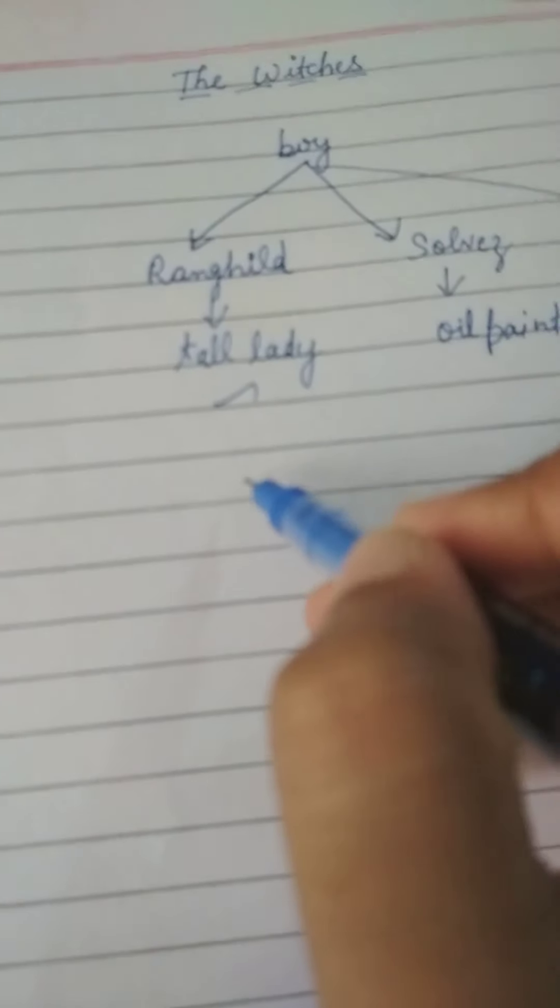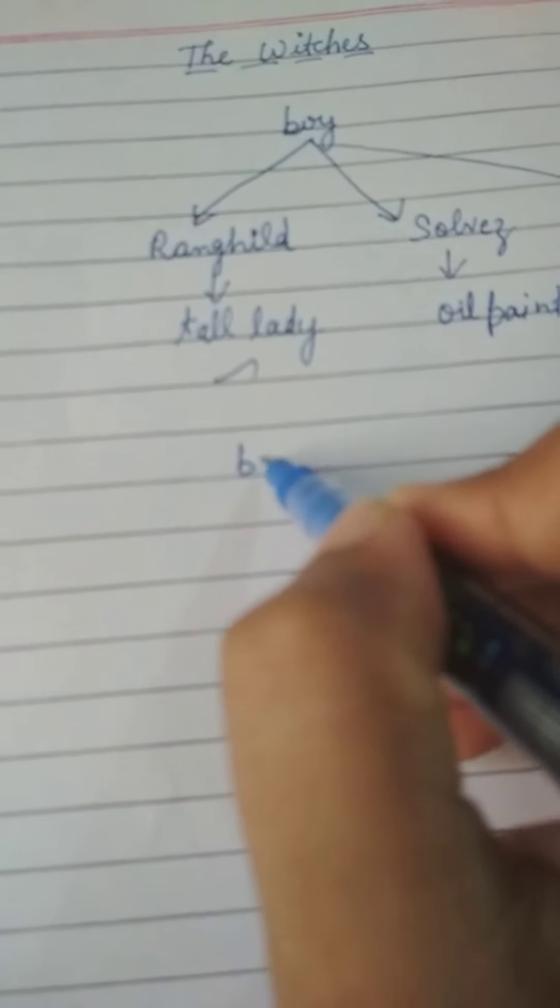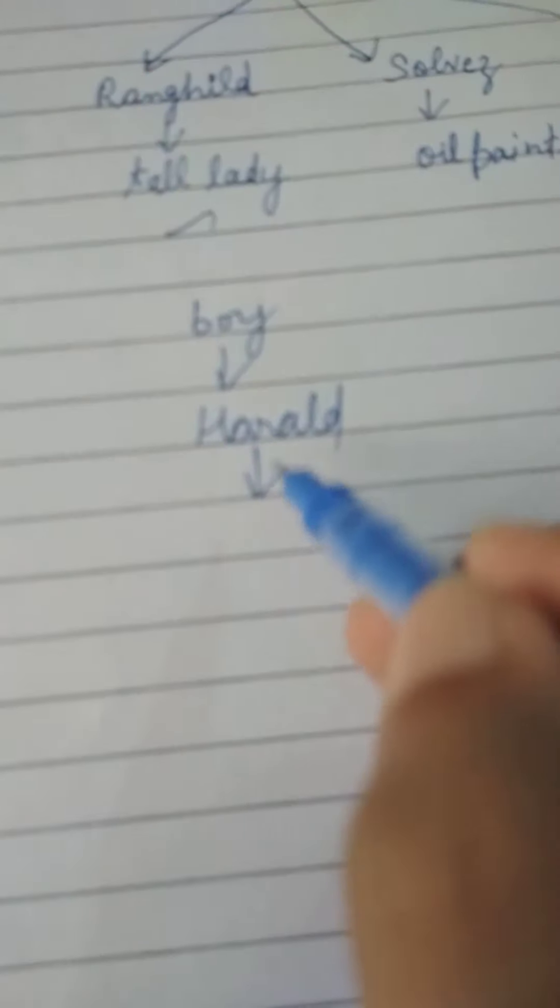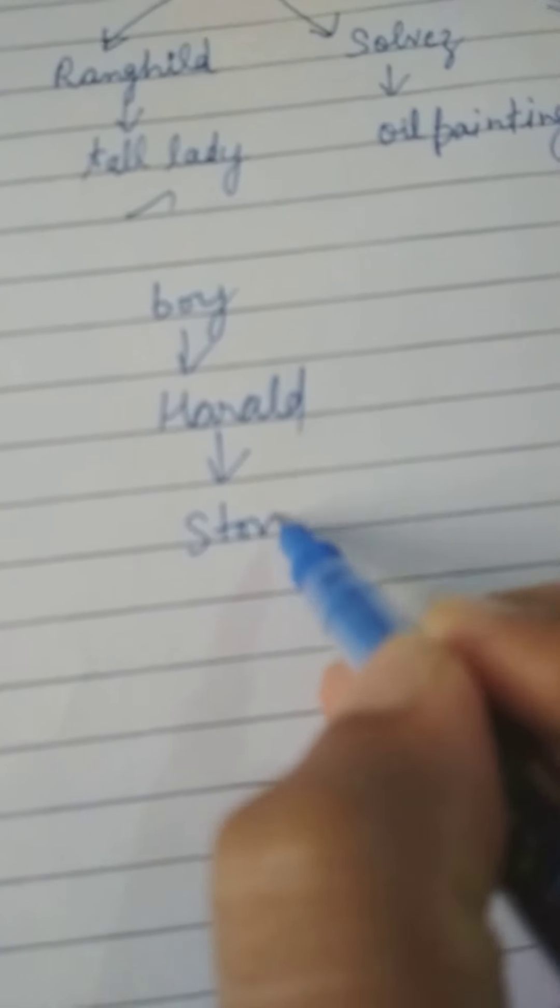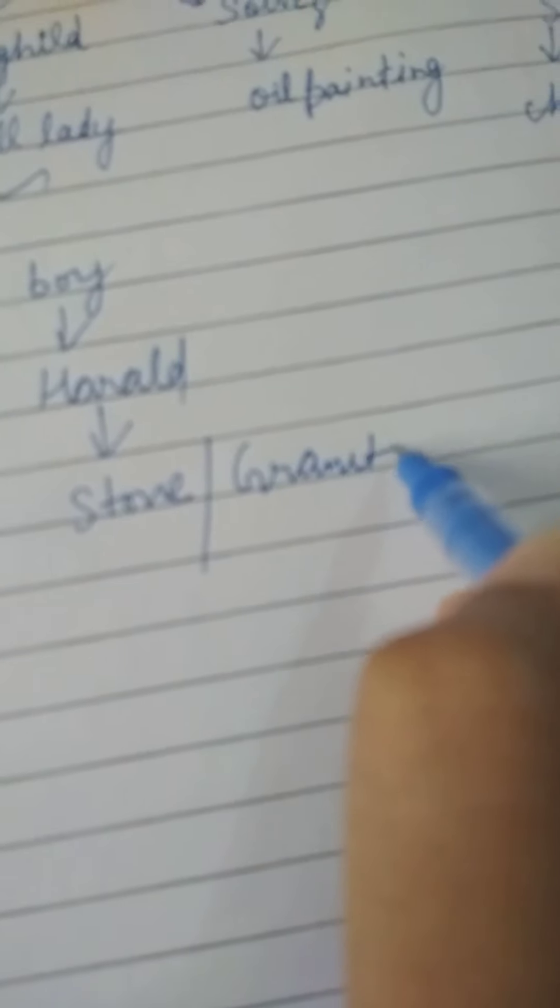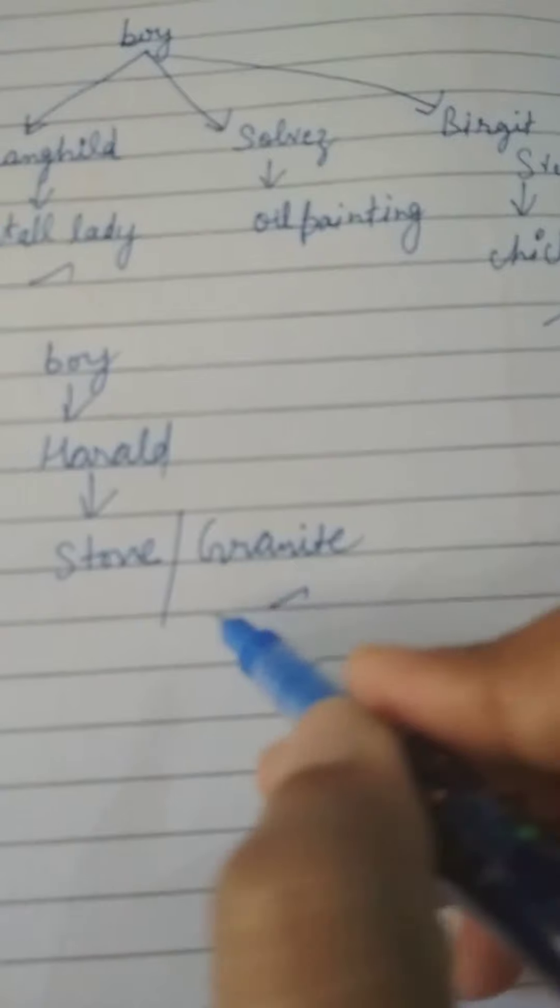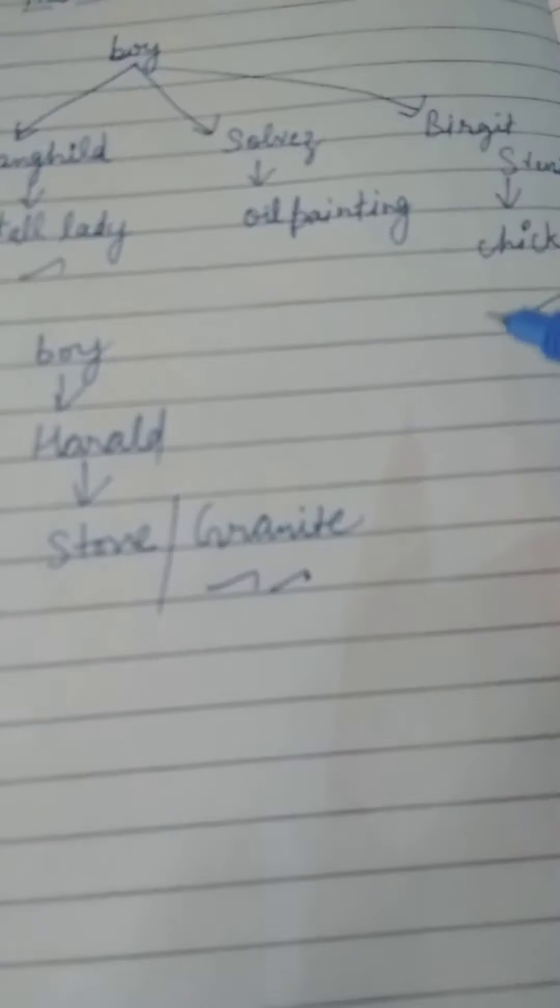And now I will tell you the fourth one. Fourth is about a boy. What is his name? His name is Herod. What happened to him? One morning he became stone. What is the stone's name? He became granite stone. Granite is a very hard grey color stone. He became this. This is his story.